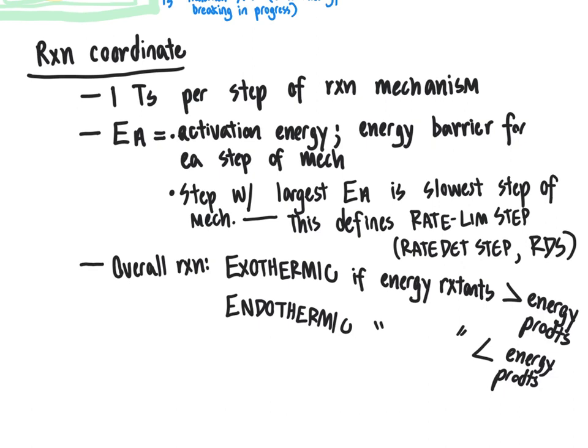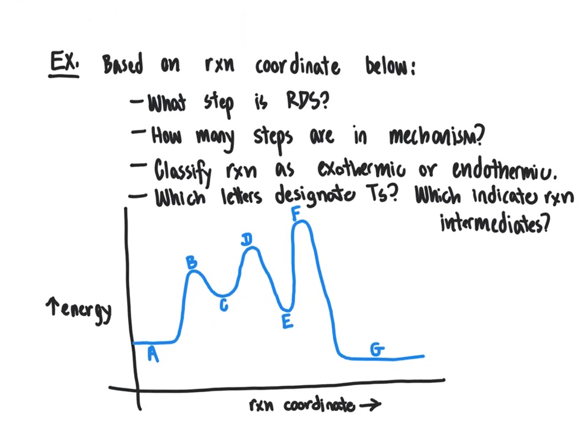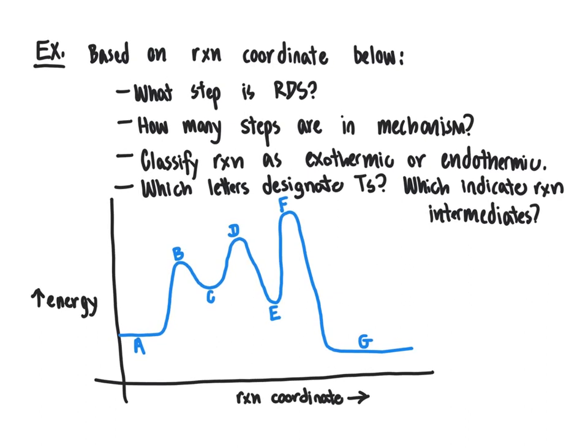Let's now take this information about reaction coordinates and apply it toward a problem to make sure we've got this down. This will illustrate how we can apply knowledge related to free radical halogenation generally toward evaluating reaction coordinates. The questions ask: based on the reaction coordinate shown, what is the rate determining step? How many steps are in this mechanism? Can we classify the reaction as exothermic or endothermic? And which letters A through G designate transition states and which indicate reaction intermediates? Pause now to try answering these before we go through the answers.